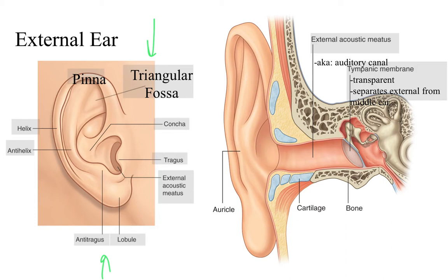Moving from the part you see from the outside and going into the actual ear itself — the external acoustic meatus — what we see at the end, and what demarcates the border between the external ear and the middle ear, is the tympanic membrane, also known as the eardrum. This is something you will be assessing during your physical exam: the tympanic membrane and what it looks like. The appearance should be in a basically neutral position, not bulging or anything like that.